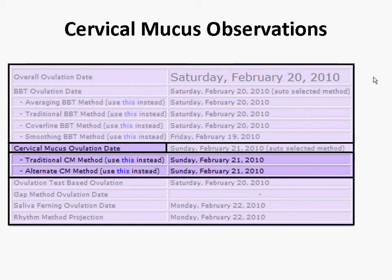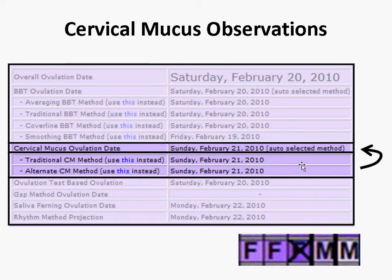Taking a look at cervical mucus observations, you'll notice that there are two different analysis techniques which are possible: the traditional and the alternate method. These produce two potentially different, but many times identical, ovulation date estimates. By default, the software will automatically pick which of these will be used. You can also manually choose which you'd like to use for a given cycle, similar to basal body temperatures, by using the use-this-instead link shown to the side. The ovulation date that's been chosen will appear on your fertility chart using a cross, as indicated below.